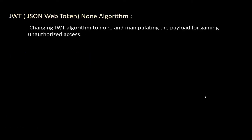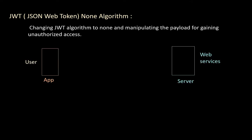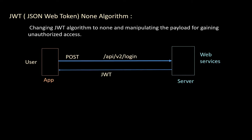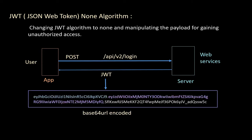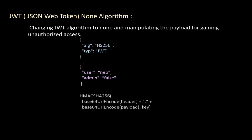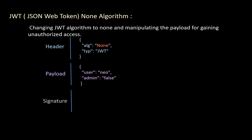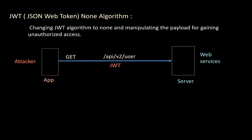JSON Web Token None Algorithm: the attacker changes the JWT algorithm to none and manipulates the payload for gaining unauthorized access. When a user logs into a server, the server sends a JWT which is included with each request as an authorization token. This JWT is in base64 URL encoded format. When decoded, the first part is the header containing algorithm and type, the second part is the payload containing user information like name and privilege, and the last part is a signature used to verify the token. If the user makes changes to the payload, the signature changes and the token becomes invalid. But if the algorithm is changed to none, the signature has no significance, so the attacker can change the payload — for example, setting admin to true — and send the modified JWT to gain admin access.